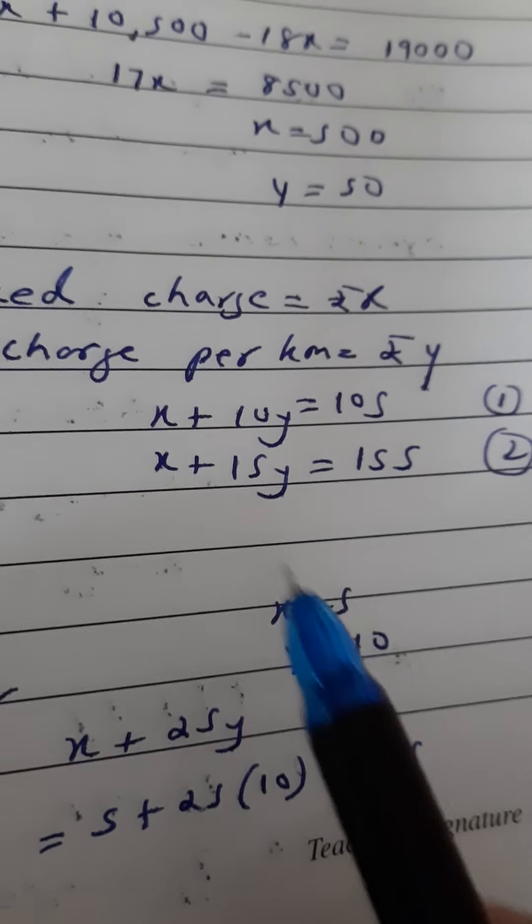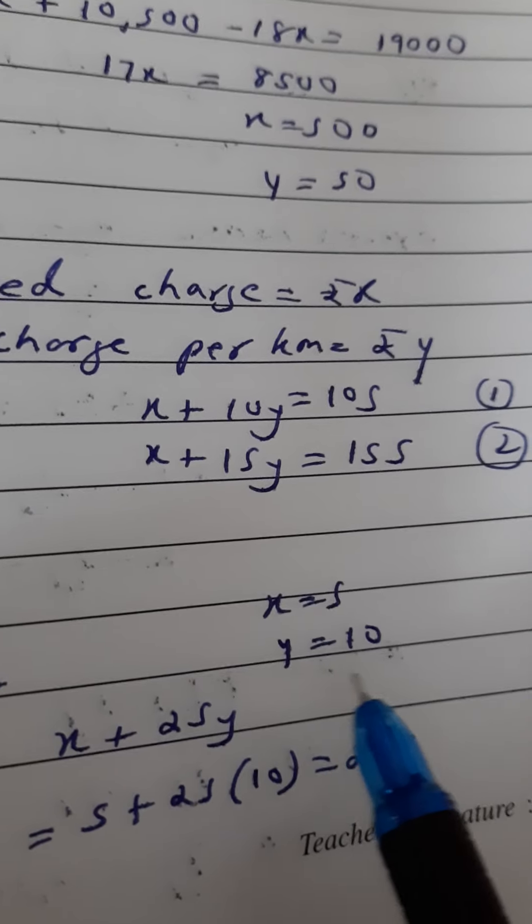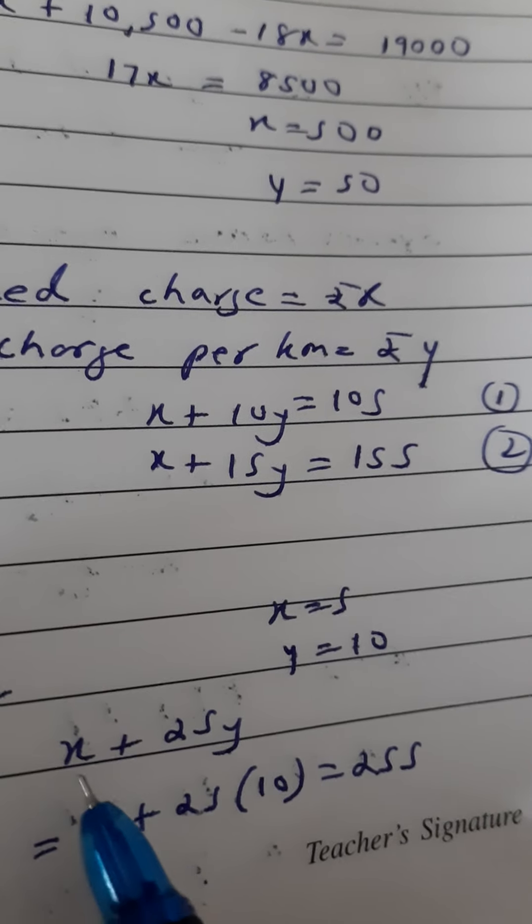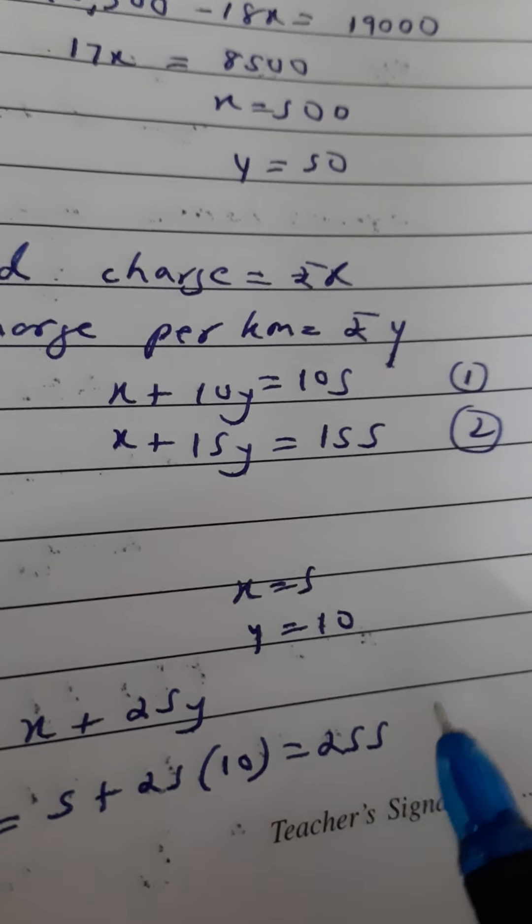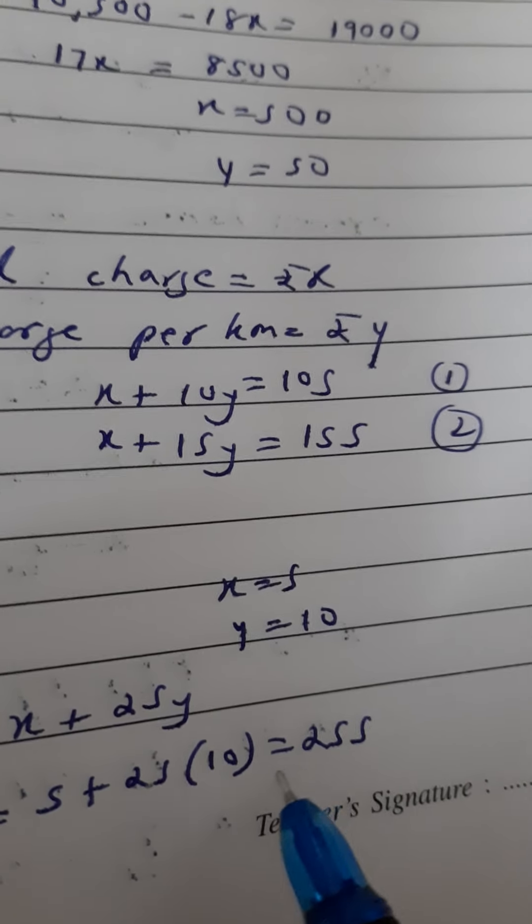You have solved this and should get these answers: 5 and 10. So instead of x you put 5, instead of y you put 10. So 5 plus 250, the answer is he will pay 255 rupees.